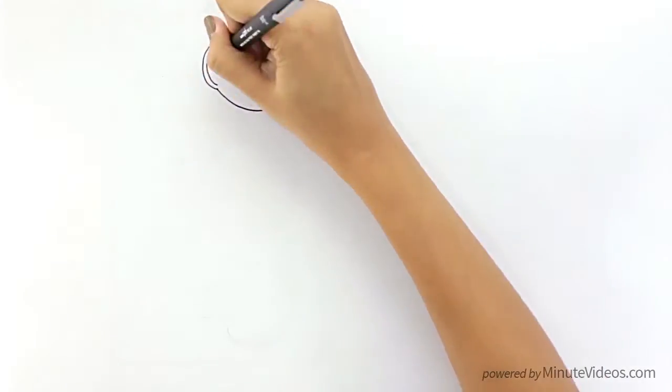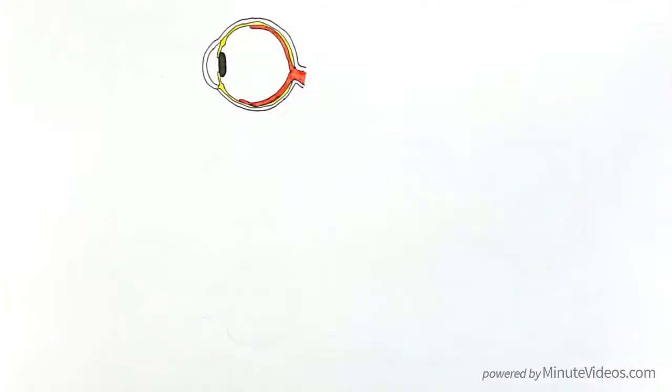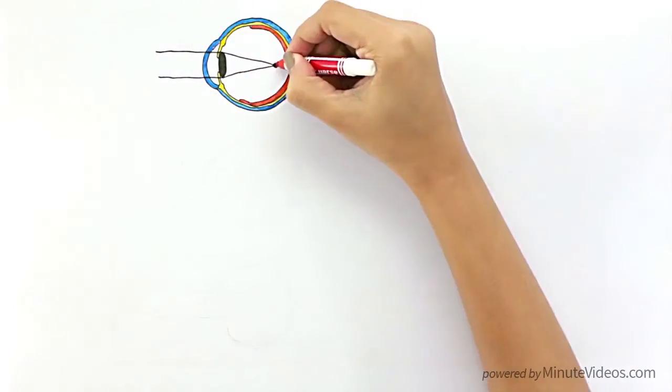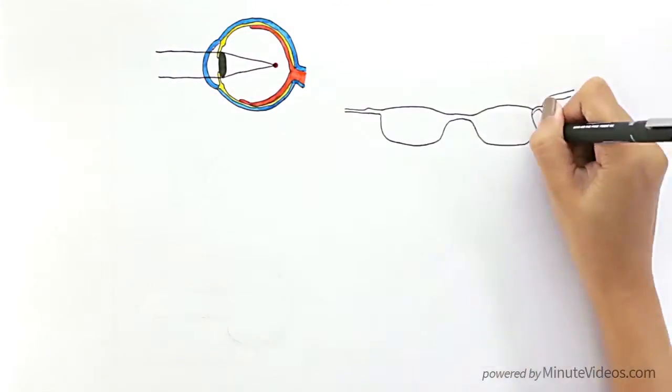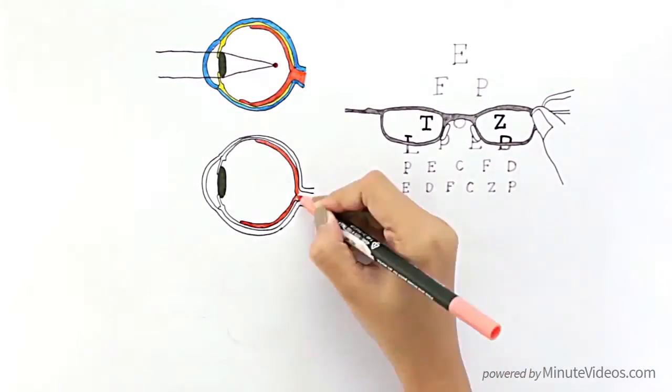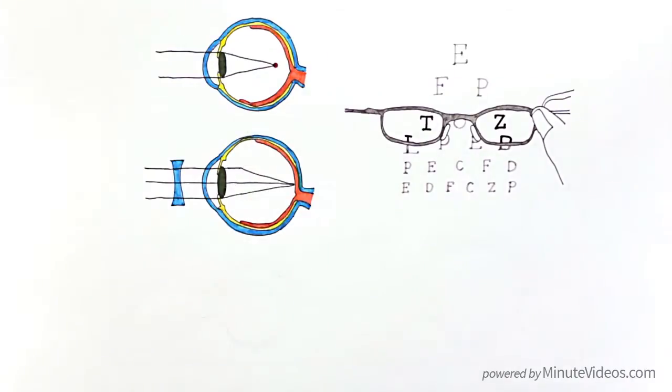If you are near-sighted, the lens in your eye bends the light too much, and the light rays cross before they reach all the way back to the retina. But luckily, we can fix that today by wearing glasses with a dispersing lens, which lets the light reach further back into the eye to hit the retina.